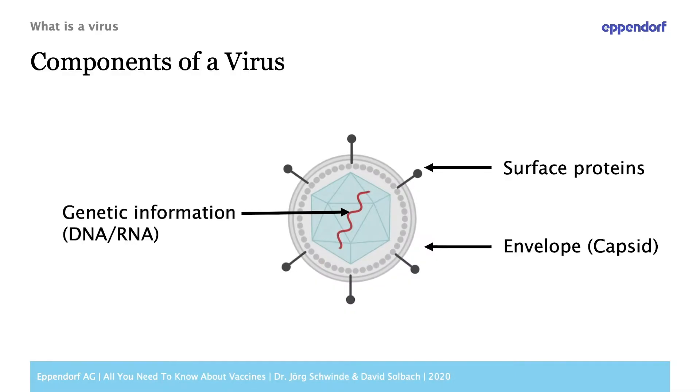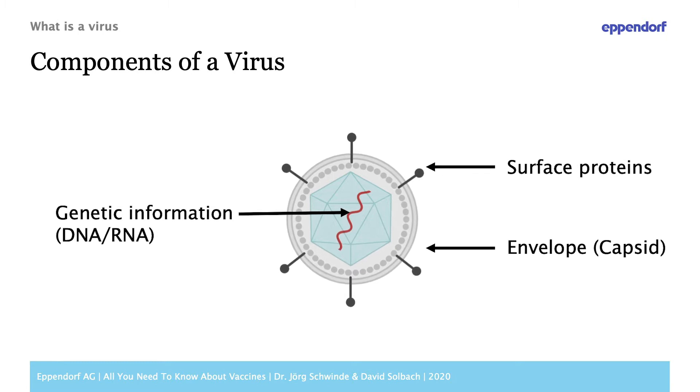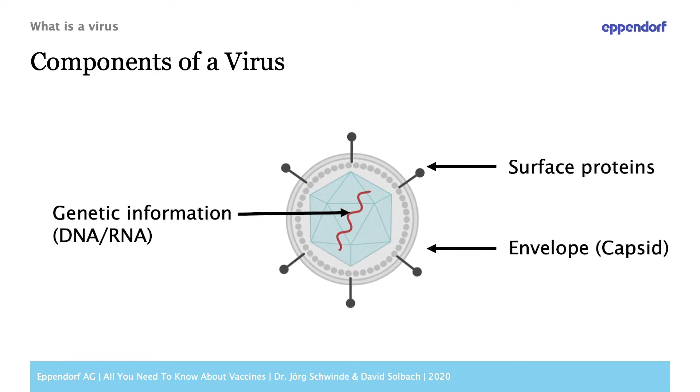Maybe we look at the virus itself and what the strategy of the virus is — why the virus infects the cell, the body. A virus itself can be considered as an infectious particle, so it is not a living organism. It has no metabolism. It needs a host to get synthesized components of the virus itself — that means the genetic information, the nucleic acid, and the protecting envelope, which is called the Capsid.